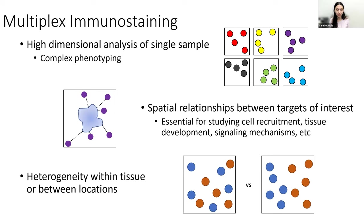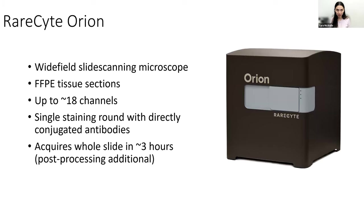Multiplex immunostaining of slides also lets you see the heterogeneity of cells either within tissues or between locations in the same tissue. At the La Jolla Institute, the multiplex instrument we have is the Verisight Orion. This is a wide-field slide-scanning microscope designed for formalin-fixed paraffin-embedded tissue sections. It can do up to approximately 18 channels, and the procedure is really easy — just a single staining round with directly conjugated antibodies, requiring a whole slide in about three hours with additional post-processing computational time.